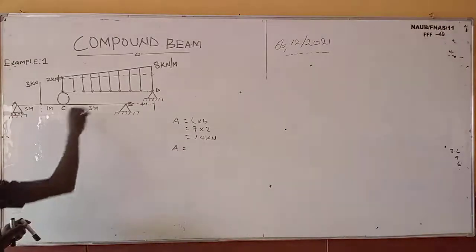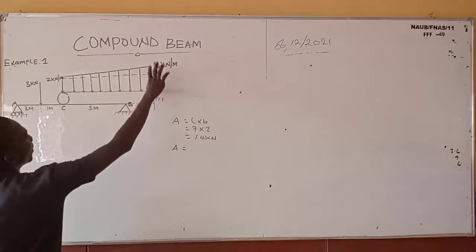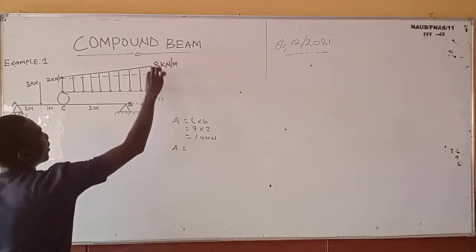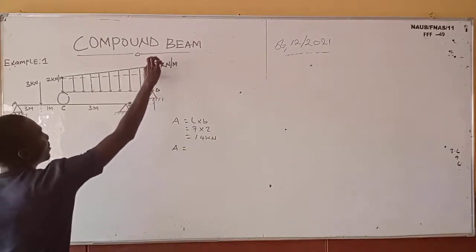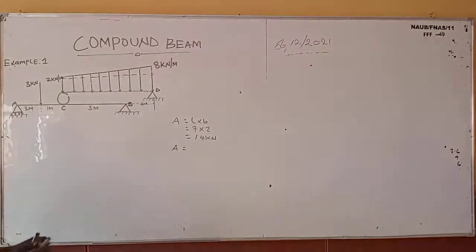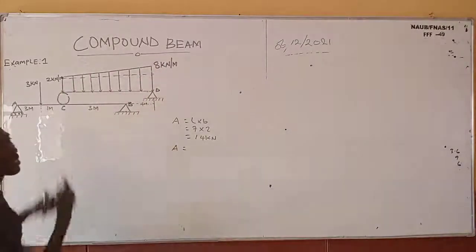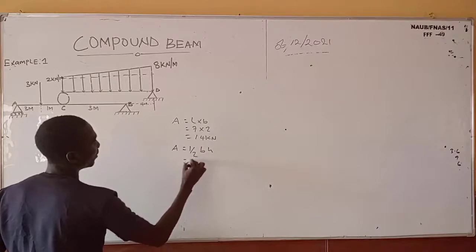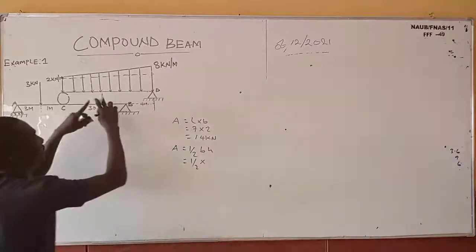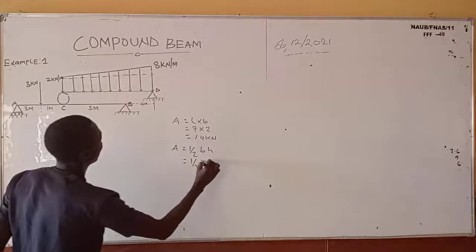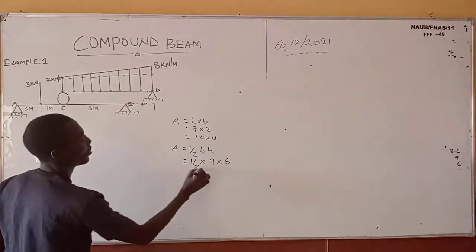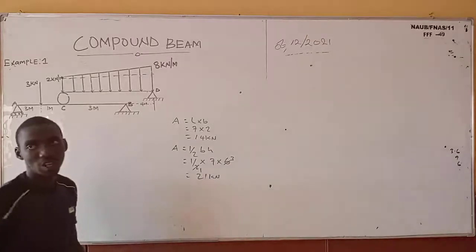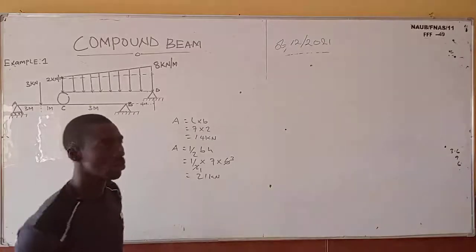Now let's convert the variable distributed load. From here to here is 2 kN/m and from here to here is 8 kN/m. To get the height of the triangular portion, it's 8 minus 2, which is 6. The load is in the form of a triangle, so we use half base times height: half times 7 times 6, which gives us 21 kilo-newtons.